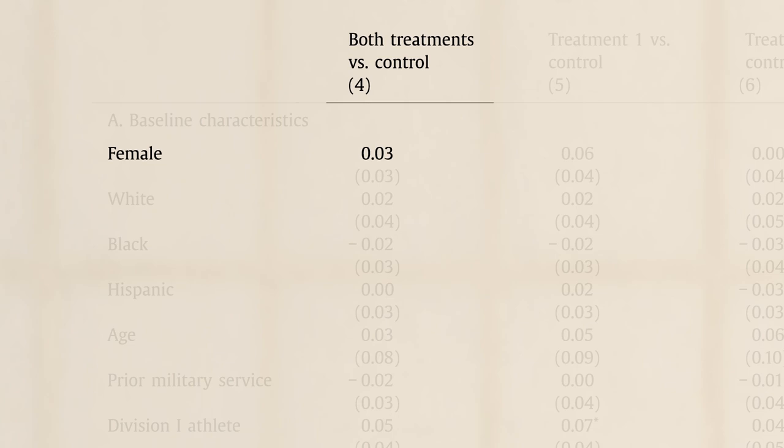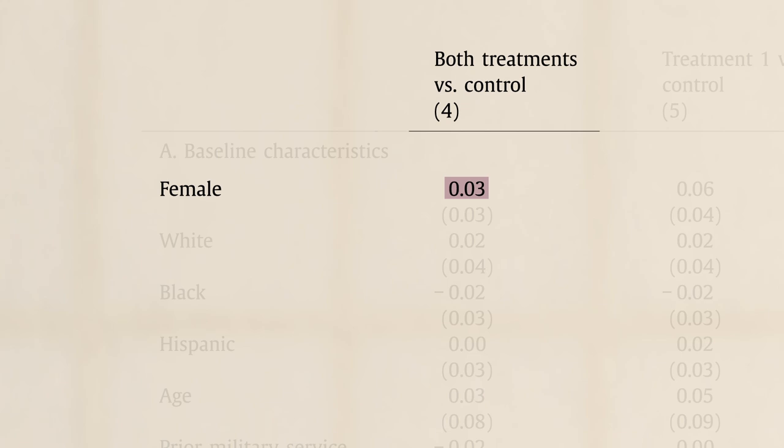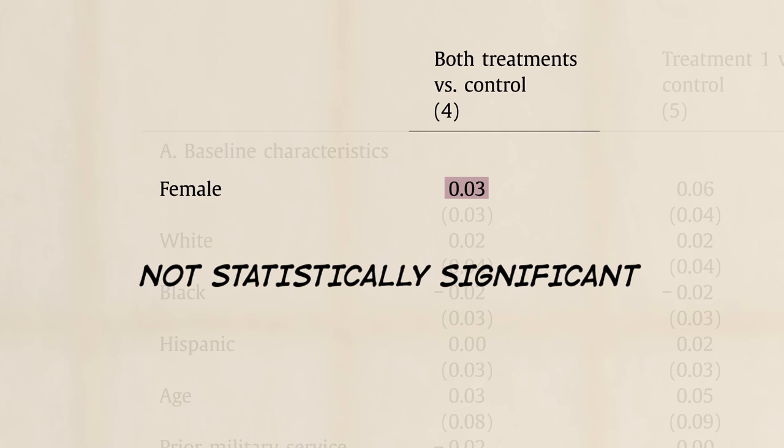You can see that the difference in proportion female between the treatment and control group is only 0.03. The difference is not statistically significant. It is the sort of difference we can easily put down to chance results in our sample selection process.